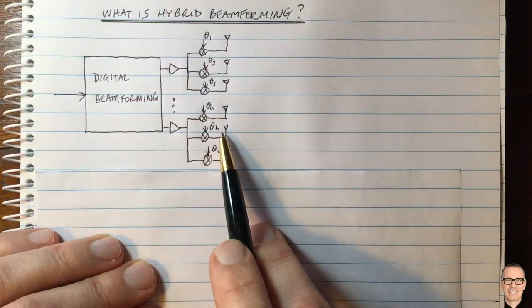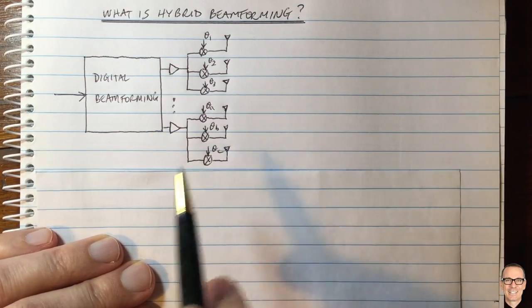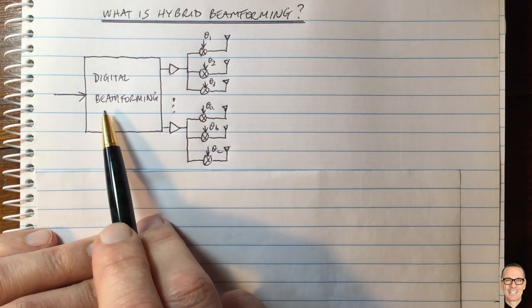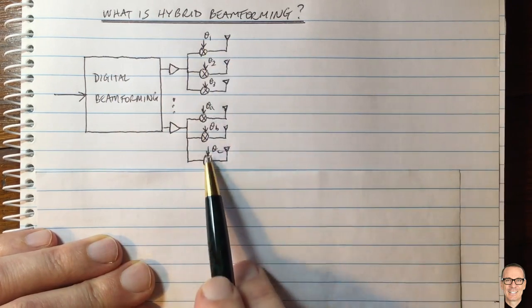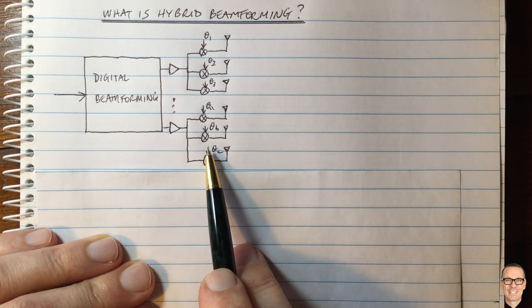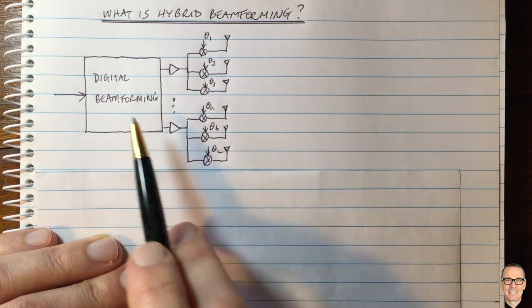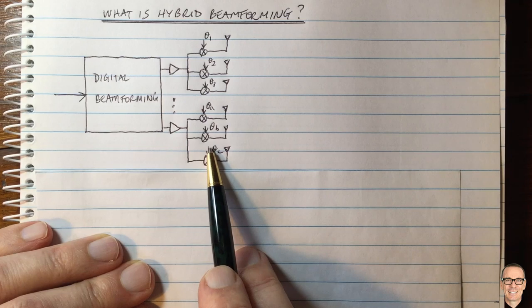So here we have one version of a hybrid beamforming structure, and the two types of beamforming are the digital beamforming and the analog beamforming. These are both trying to achieve the same goal of forming beams, so it's a hybrid of two different forms of beamforming.